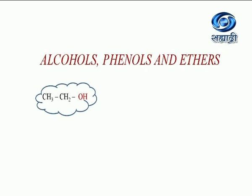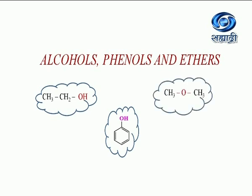Now if you see these three units which we are going to study under this chapter: one is alcohol, the functional group is OH; another is phenol, the functional group is OH; and the third compound is ether, where the functional group is a divalent oxygen. We study all three together because alcohol and ether are functional isomers of each other — their molecular formula is same but functional group is different — and alcohols and phenols have the same functional group, that is OH.